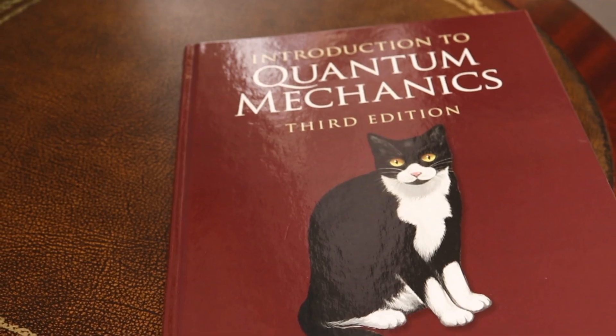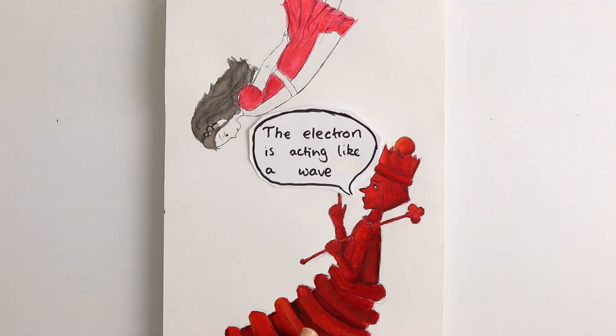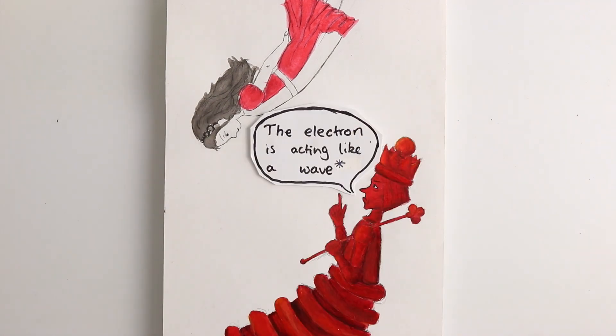If you crack open a quantum mechanics textbook, you'll see wave stuff all over. But when a physicist says an electron is acting like a wave, the actual meaning of this statement is quite subtle, both mathematically and philosophically.